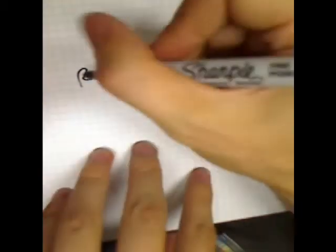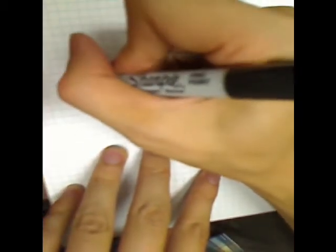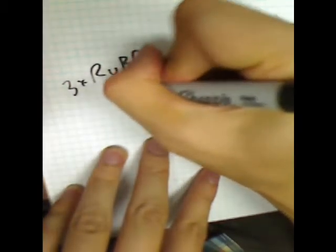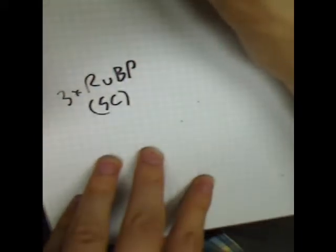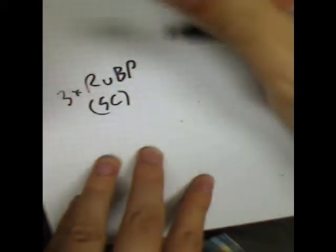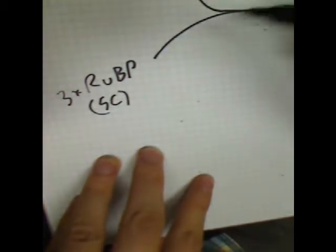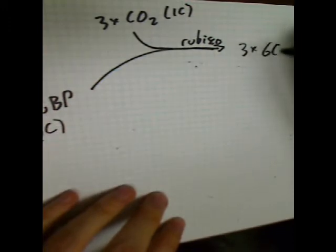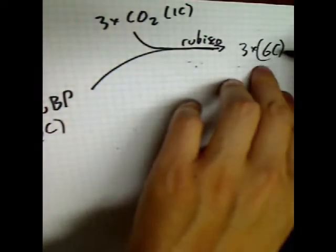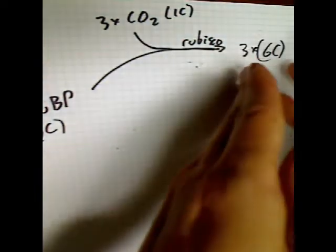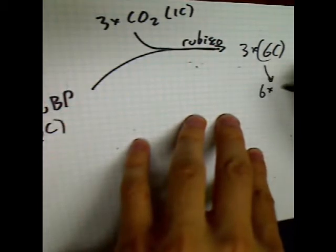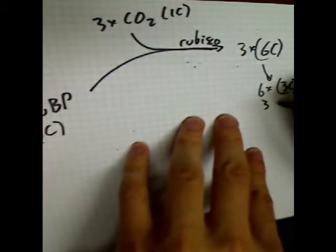In the Calvin cycle, we start with three molecules of RuBP — ribulose bisphosphate — which has five carbons. Rubisco takes three molecules of carbon dioxide, each with one carbon, and joins those carbon dioxides to the RuBPs to form three molecules of a six-carbon compound. That six-carbon compound is actually really unstable and immediately breaks into two three-carbon compounds each, so we end up with six molecules of three-phosphoglycerate, or 3-PG.